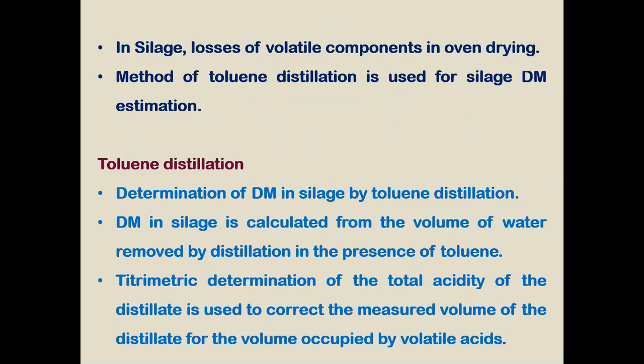In case of silage, losses of volatile components can occur during hot air oven drying. So we cannot use the hot air oven for long time in case of dry matter analysis of silage. There are different ways to determine the dry matter content of silage.